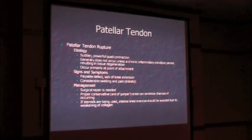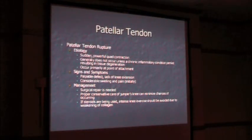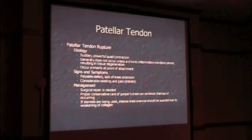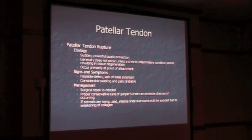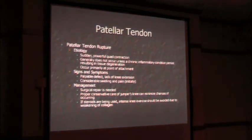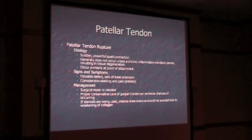Patella tendon rupture — you'll know this patient when they come in; it's a pretty obvious finding. It usually occurs with a sudden powerful quadriceps contraction, and the patient often has underlying tendinitis which weakens the tendon. It usually occurs at the point of attachment. These patients won't be able to lift their leg up because they'll have a detached extensor mechanism, a palpable defect, and significant pain and swelling. Surgery is indicated. You can usually avoid this by treating tendinitis early.